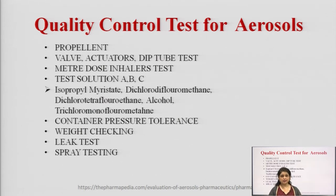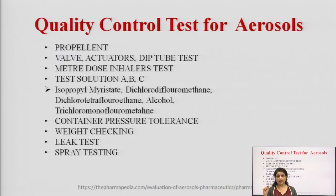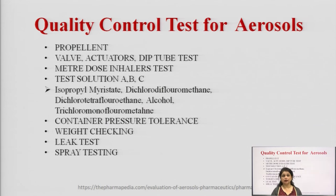Quality control tests can be divided into two parts: in-process tests and end product tests. For in-process tests, we have to go for propellant testing, valve system testing, meter dose inhaler testing to prove the accuracy of the dose coming out of the container, container pressure testing, weight checking, leak testing, and spray testing.